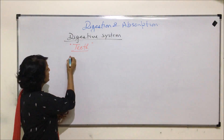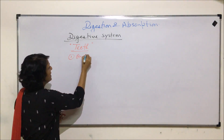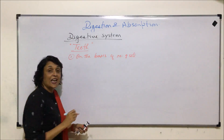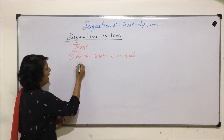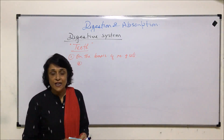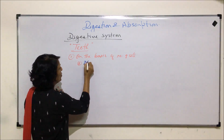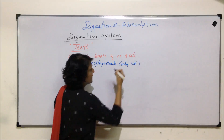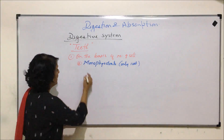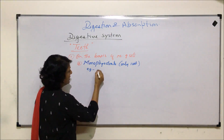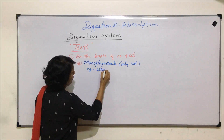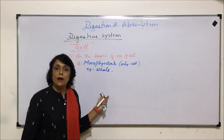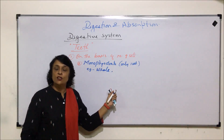On the basis of the number of sets which an organism gets in its lifetime, we give certain terms. If an organism gets only one set in its lifetime, they are known as monophyodonts. Examples of monophyodonts are whales and certain lower animals like anteaters.